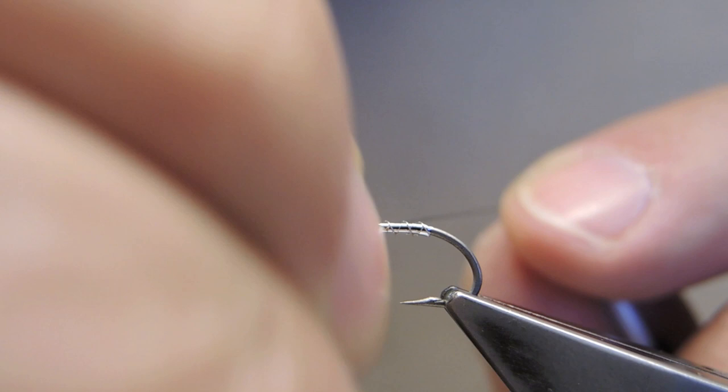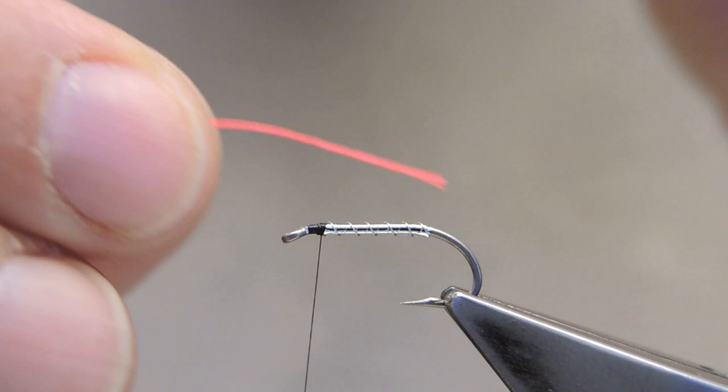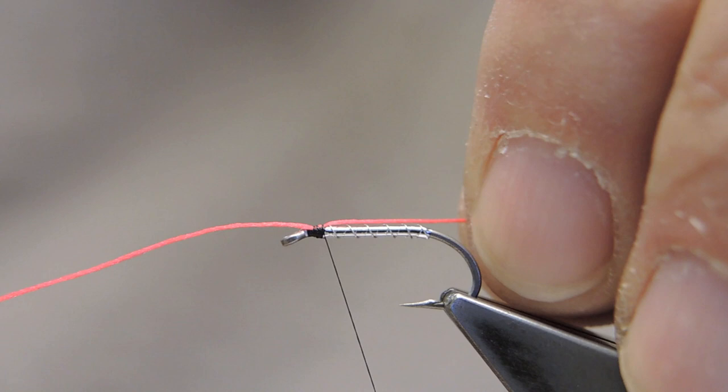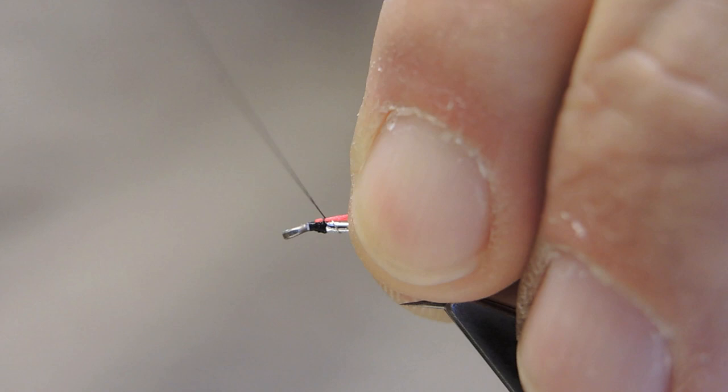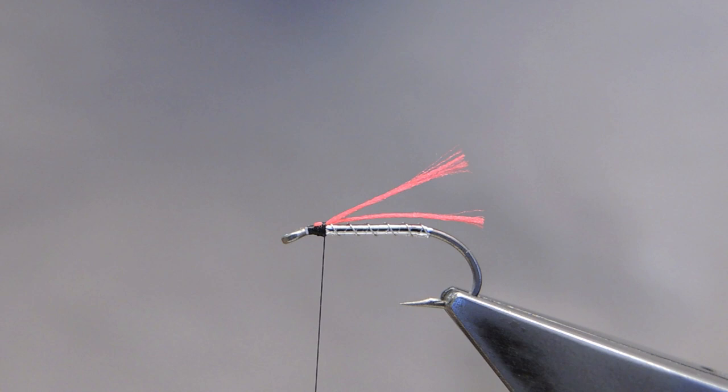The wing will consist of two materials. The first one is some Glowbrite in number 4. I tie in just a single strand on top and fold back to make a double. Then trim it to the length of the hook, just back of the bend, and brush it out a little later.